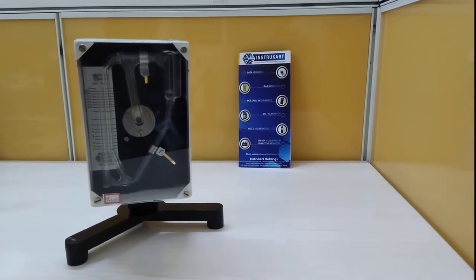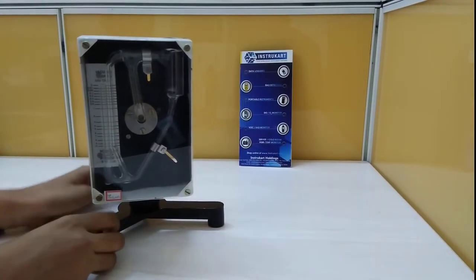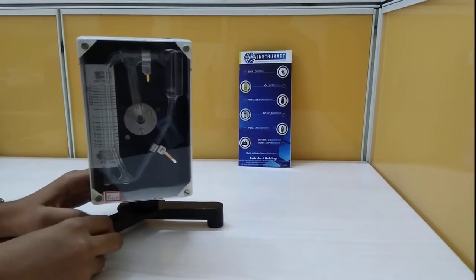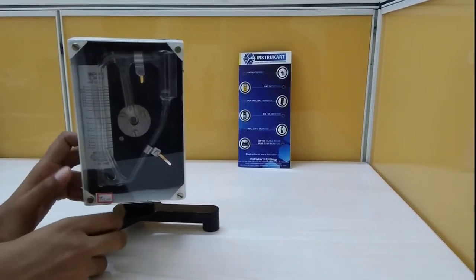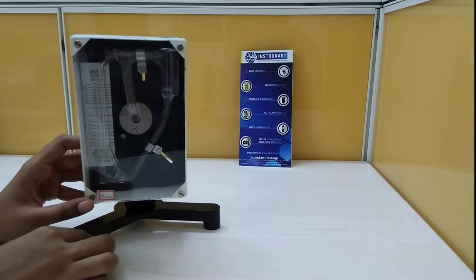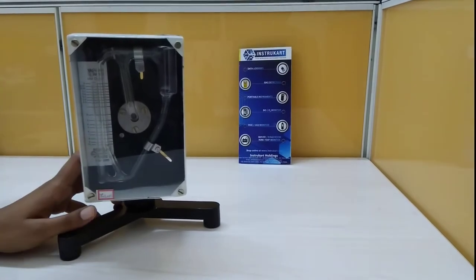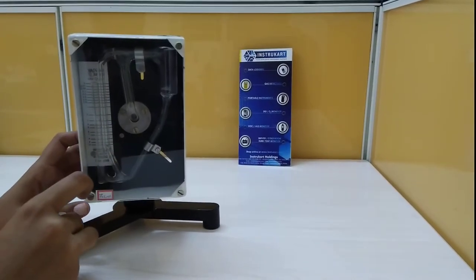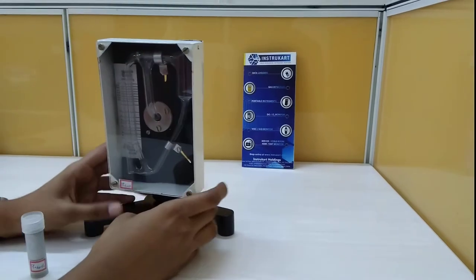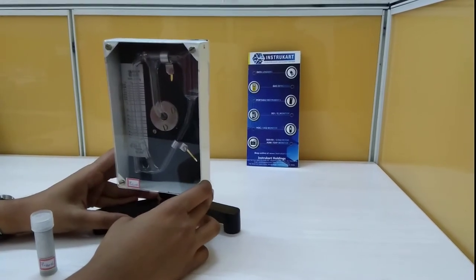Hello all, welcome to Instacart Holdings, your worldwide instrument partner. Now I am going to walk you through the McLeod gauge. This McLeod gauge is used to measure vacuum using mercury.